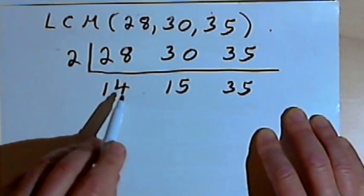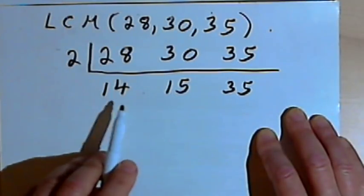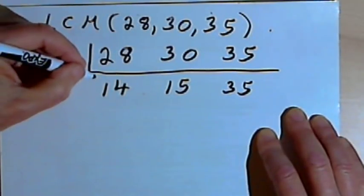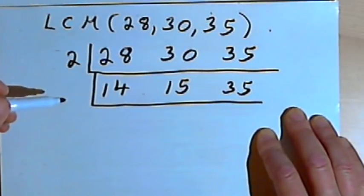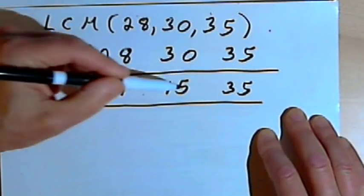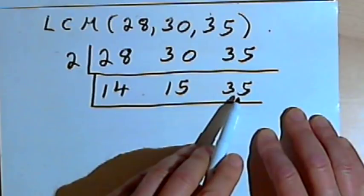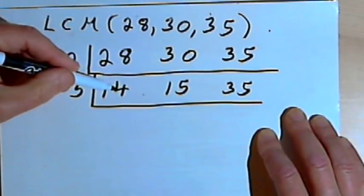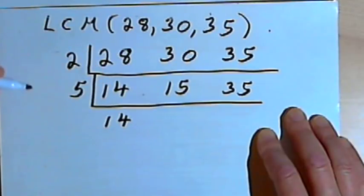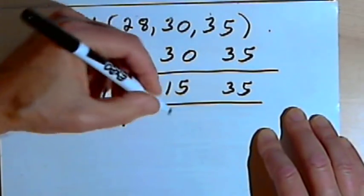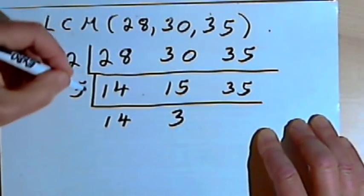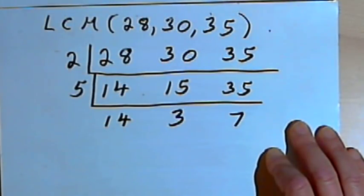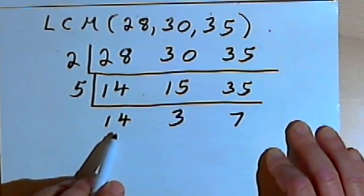Now I'm left with 14, 15, and 35, which are composite numbers. As long as I've got composite numbers — or duplicated numbers, I'll get to that later — I have to repeat the process. So I'll draw another box. I can divide 15 and 35 by 5. I'll put a 5 to the left of the box. 5 does not divide into 14, so I'll bring down 14. 5 divides into 15 three times, and 5 divides into 35 seven times. But 14 is still a composite number, so I've got to divide again.